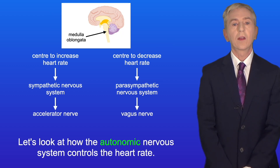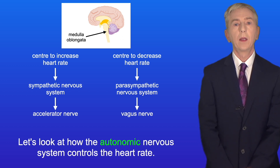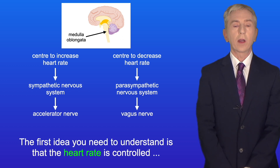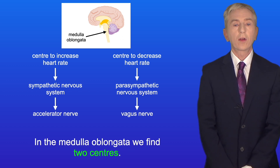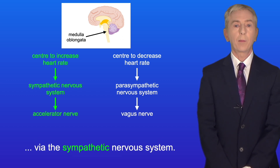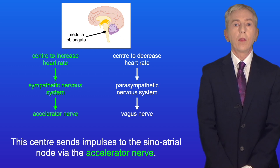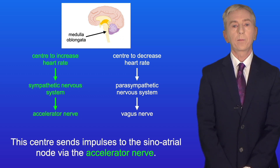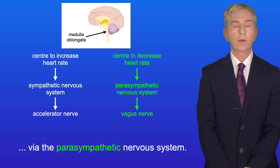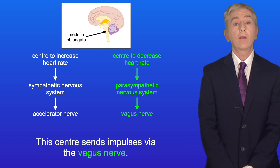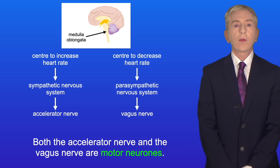The heart rate is controlled by the medulla oblongata in the brain. In the medulla oblongata we find two centers. One center increases the heart rate via the sympathetic nervous system and sends impulses to the sinoatrial node via the accelerator nerve. The other center decreases the heart rate via the parasympathetic nervous system and sends impulses via the vagus nerve. Both the accelerator nerve and the vagus nerve are motor neurons.